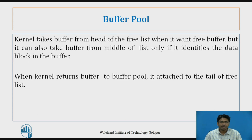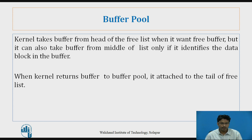The kernel takes the buffer from the head of the free list when it wants a free buffer. But it can also take the buffer from the middle of the list only if it identifies the data block in the buffer — we will see this in the next slides. When the kernel returns a buffer to the buffer pool, it attaches it to the tail of the free list.